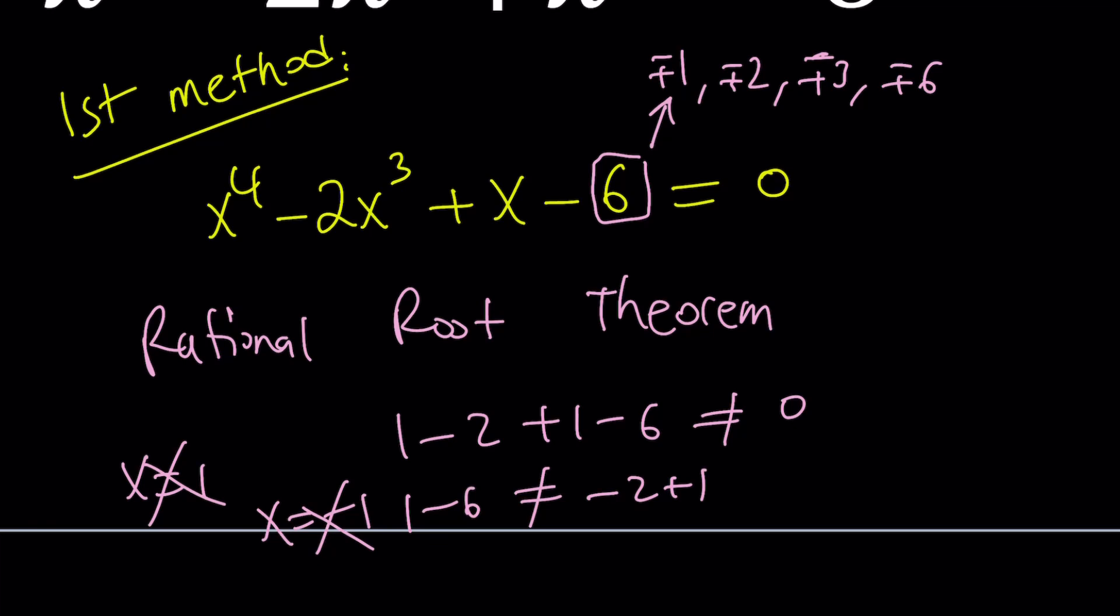How about 2? Doesn't work. Negative 2 doesn't work. I know that this equation, unfortunately, fails the rational root theorem test. In other words, this equation has no rational roots. And that's quite possible, especially with quartics. At least a cubic has to have one real solution, but a quartic may not even have any real solutions. They can all be complex.